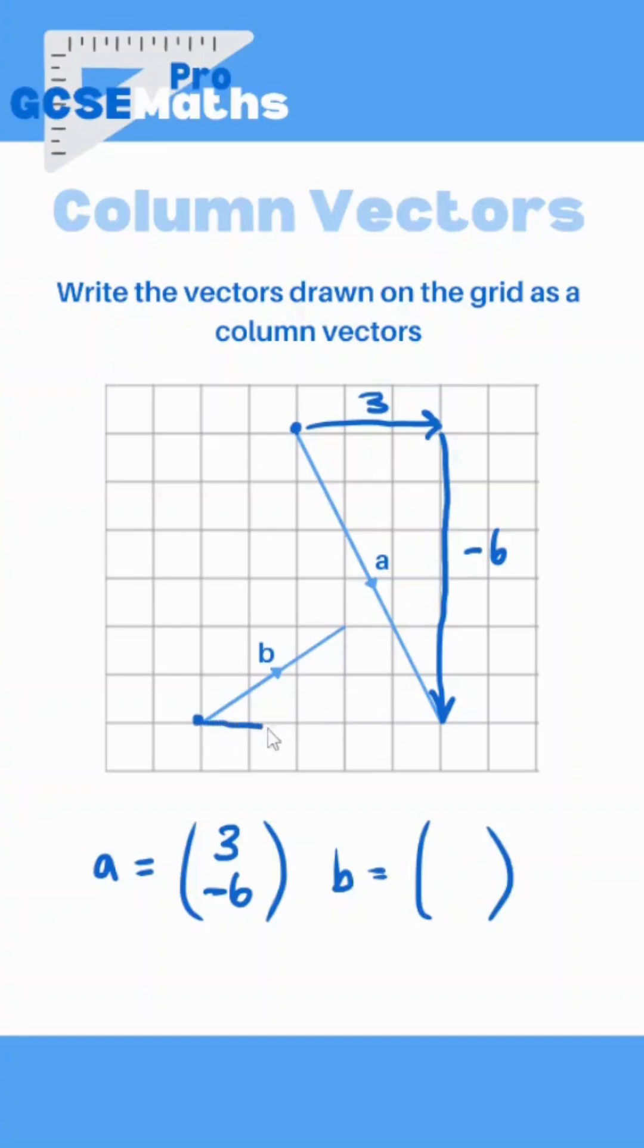So to go across, I've got one, two, three again. So that's three to the right again, so that's positive three. But this time I'm going up by two. So that means positive two at the bottom.